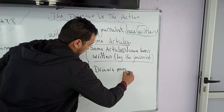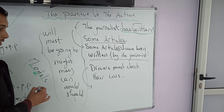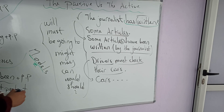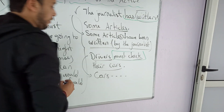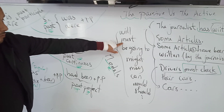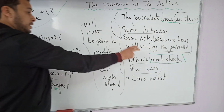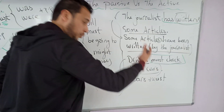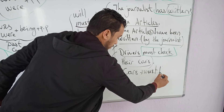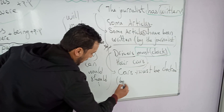'Drivers must check their cars' — active voice. We switch to passive voice, starting with the object 'cars.' The verb here is 'must check.' We come back and look for verb 'to be' in the list. Since we have a modal 'must,' we rewrite the modal again: must + be + past participle. So: 'Cars must be checked by drivers.'